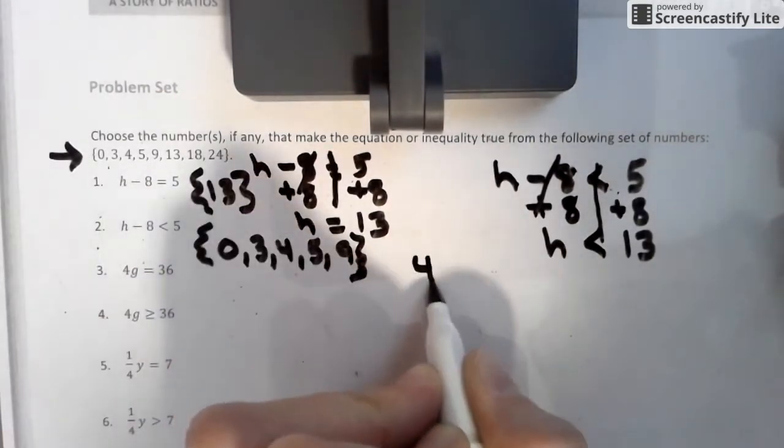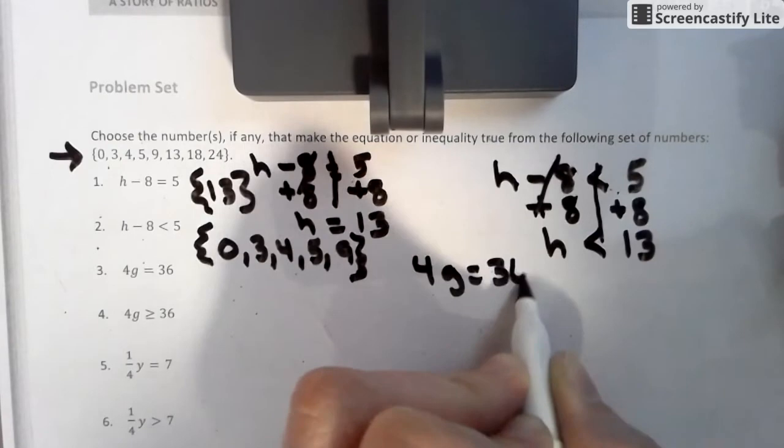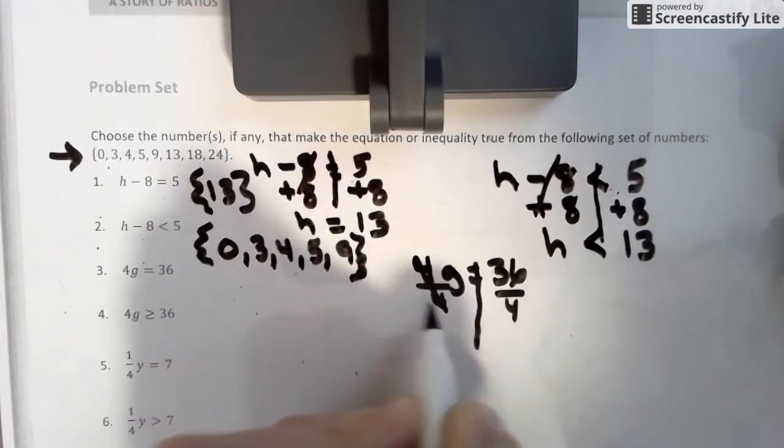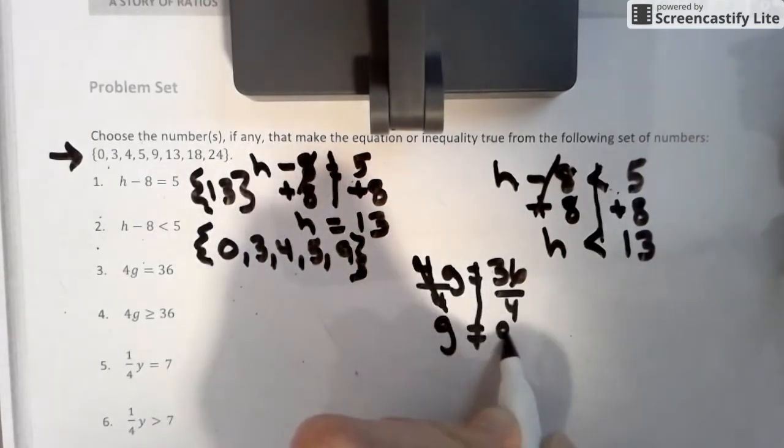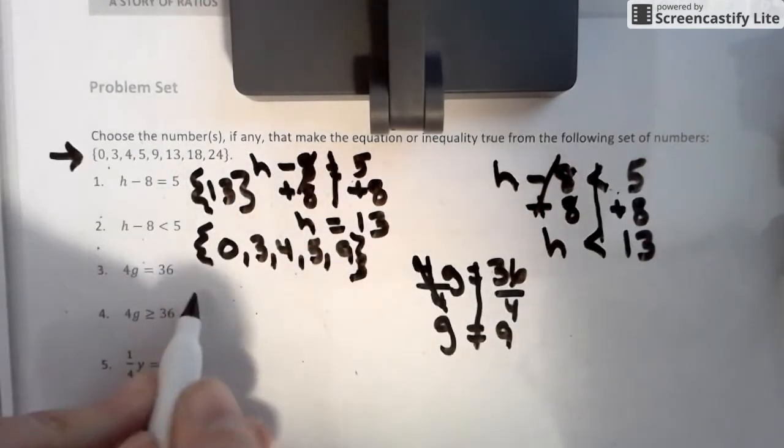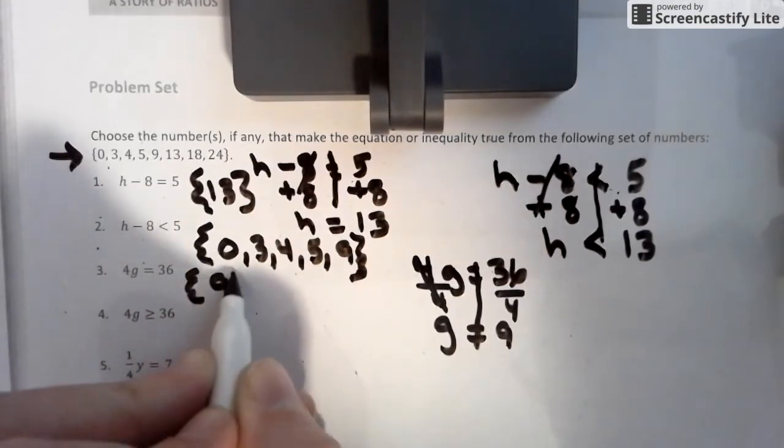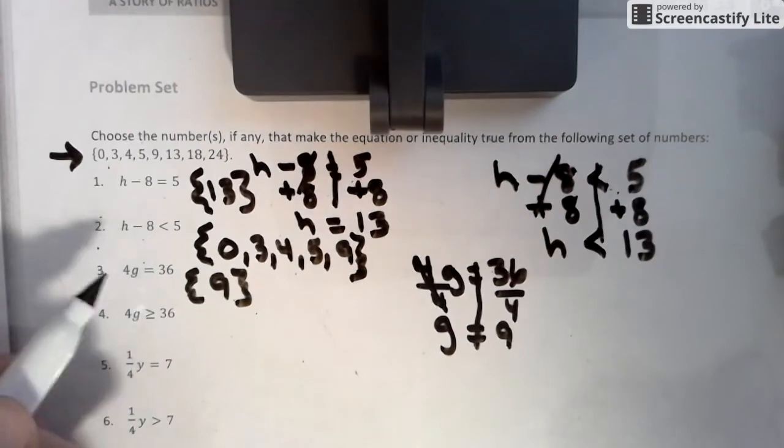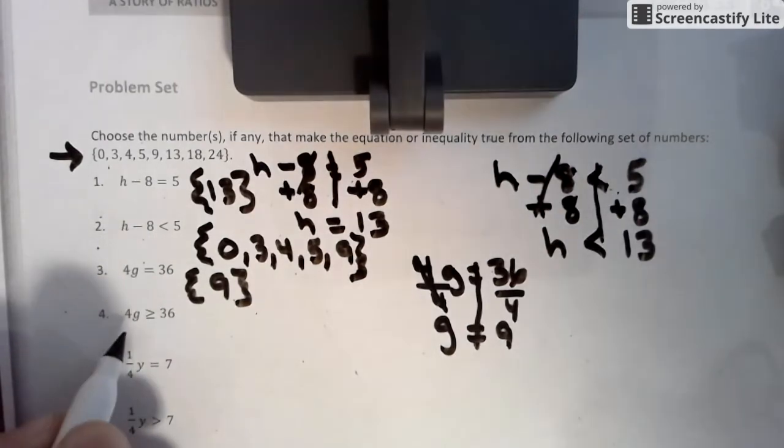So we look at 4G equals 36. We want to solve this. Instead of multiplying by four, we're going to divide by four. So G equals nine. Is nine up there? Yes. So the solution here is nine only. Okay. Because it's an equal sign. So there's only one thing it can equal.